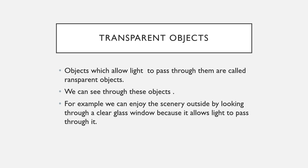Wood, on the other hand, does not allow light to pass through it — it obstructs the path of light. This brings us to the definition: transparent objects are objects that allow light to pass through them very easily. The best examples are glass, a glass tumbler, and a glass window.